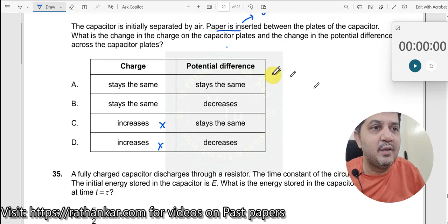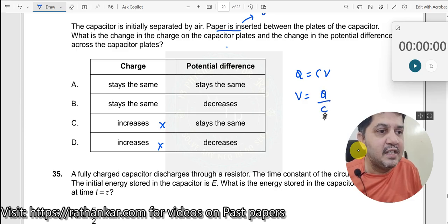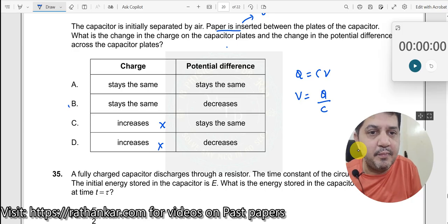Then, next, what happens to the change in potential difference across the capacitor plates? So we have Q is equal to C into V. Now, C increases definitely, no doubt. What will happen to V here? V is equal to Q by C. When C increases, V should decrease. So the answer should be B over here.